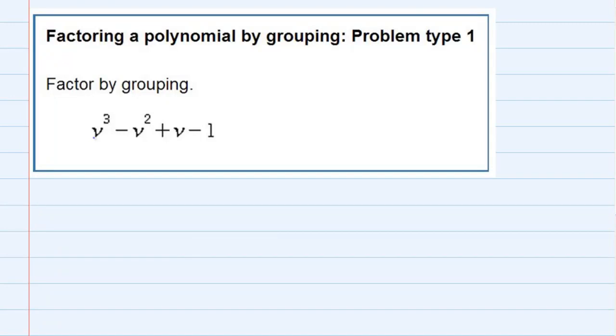Factoring a polynomial by grouping, problem type 1. We're asked to factor by grouping and we have four terms here, so that's a good guess that we're going to be using grouping.